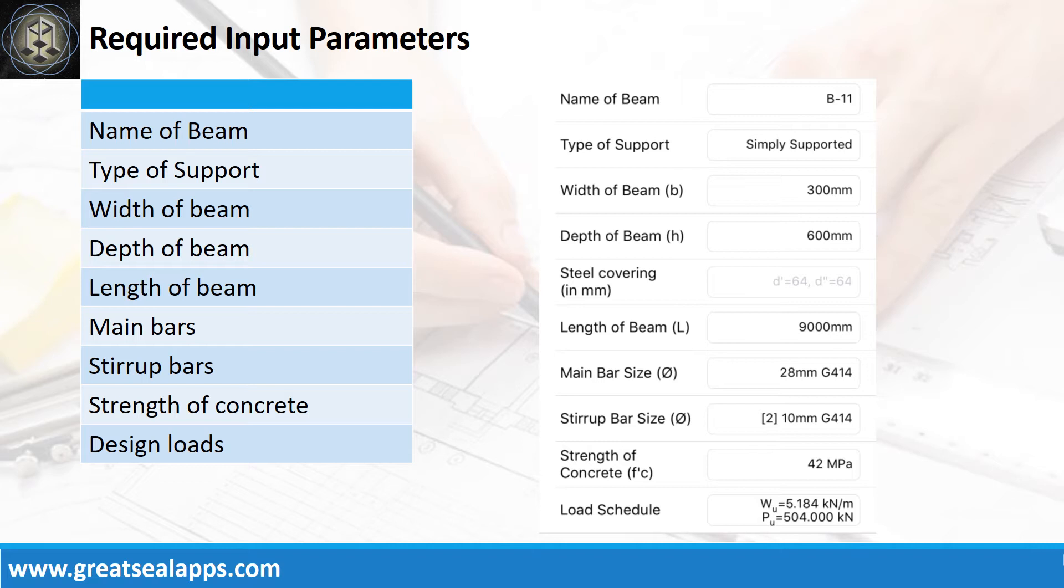42 MPa, factored uniform load, 5.184 kN per meter, and factored concentrated load, 504 kN.